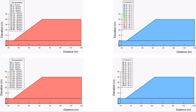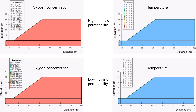This slide presents the results of numerical modelling of sulphide mineral oxidation processes. The top row presents the oxygen concentration and the temperature distribution within a waste rock dump with high intrinsic permeability, while the bottom row presents results for a dump with low intrinsic permeability.